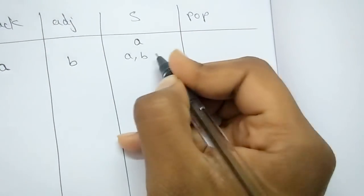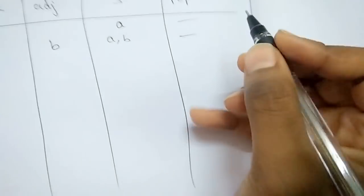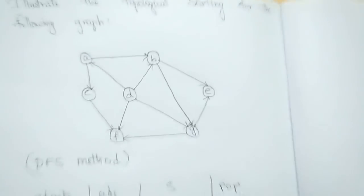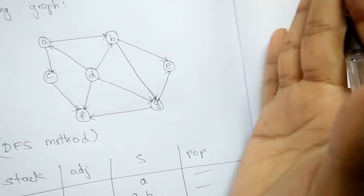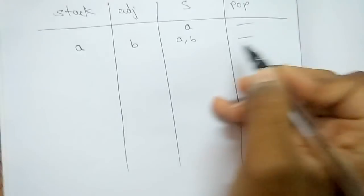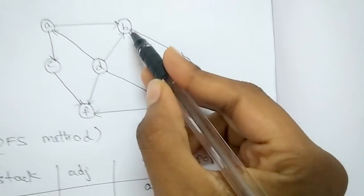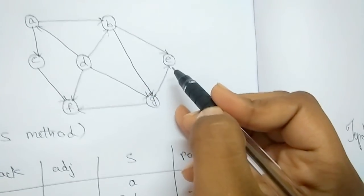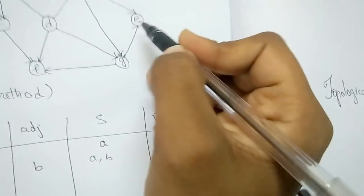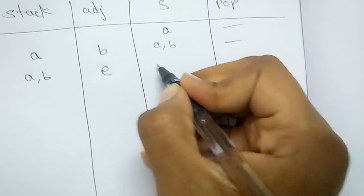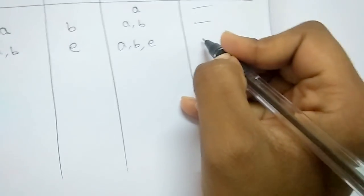I've now encountered B too, so I write down A, B in the Stack column. We only pop out a vertex when it has no adjacent vertex remaining; that situation hasn't occurred yet, so popping out nothing. Now in the stack we have A and B. Adjacent to B: the edges go towards E and G, so alphabetically I'll take E first. I've encountered E, so I write it down — Stack is now A, B, E.